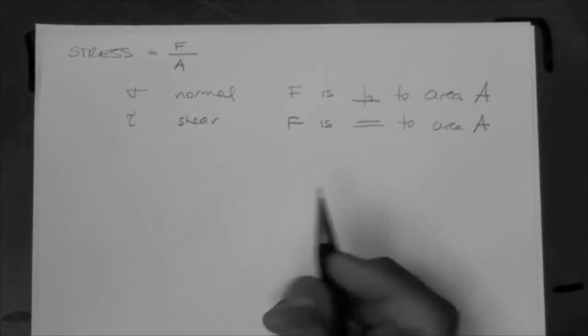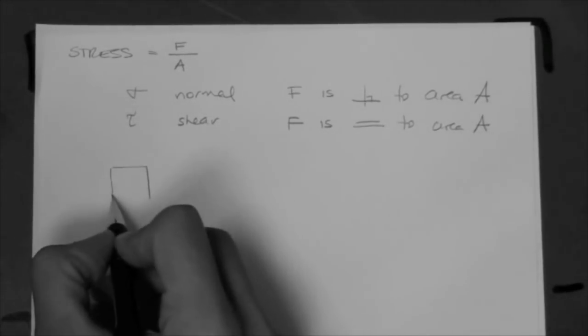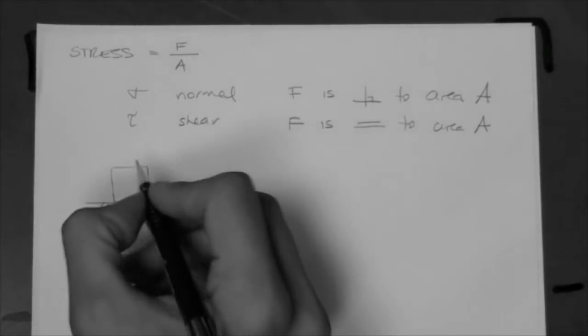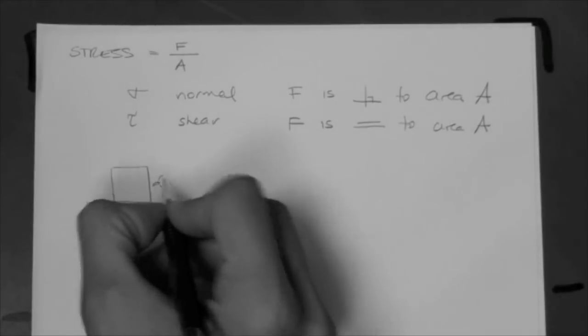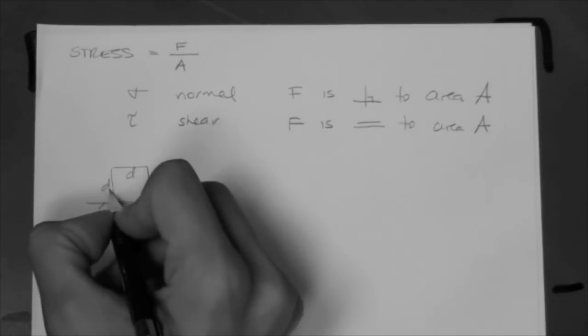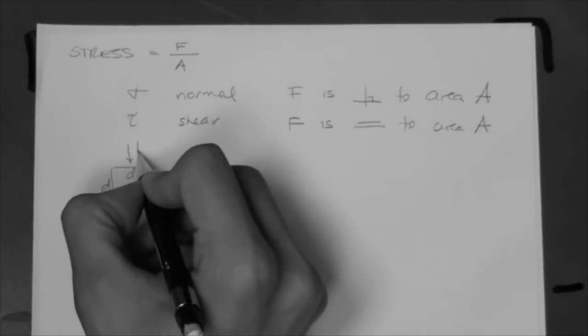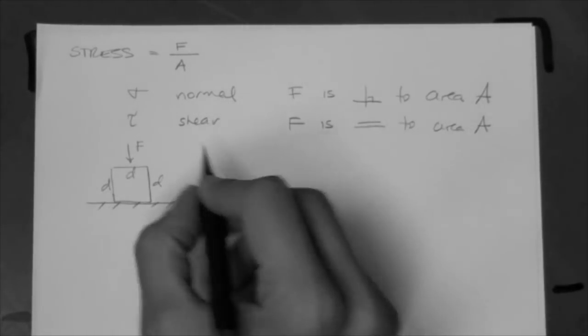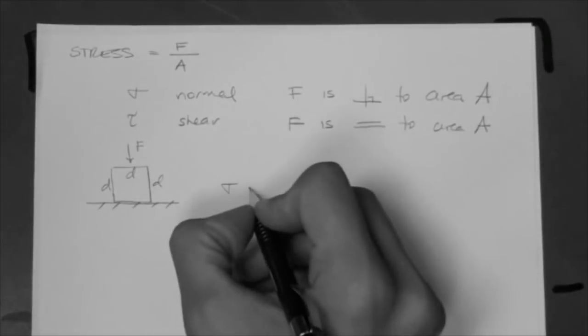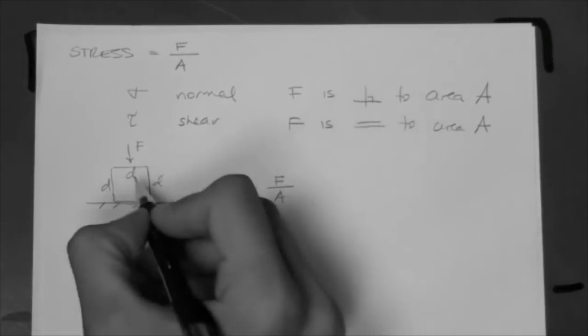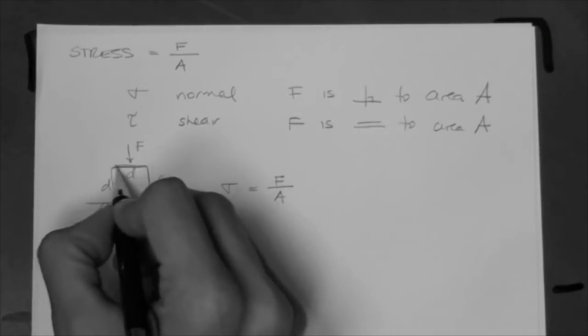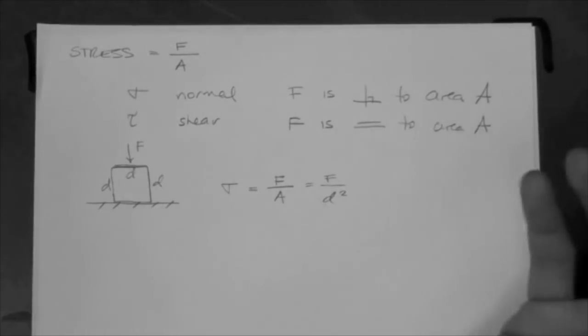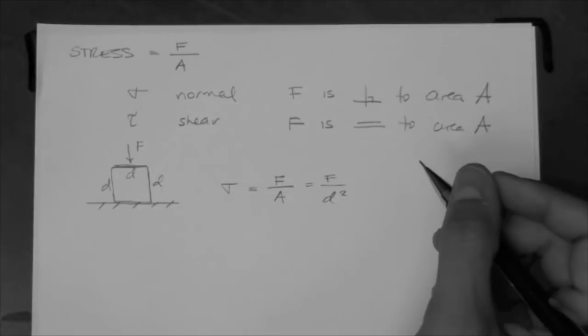So, for example, let's say that we have a block, a cube, and it's sitting on a fixed surface. Now, let's say that the side of this cube has a size D. Now, let's say that there's a force here, F, and it's applied normal to the top of the cube. Then, the stress sigma that acts on the top of the cube, vertically downwards, is equal to the force over the area. What's the area? D squared. This D times the D into the page. So, this is equal to F over D squared. And, basically, that's the normal stress sigma.